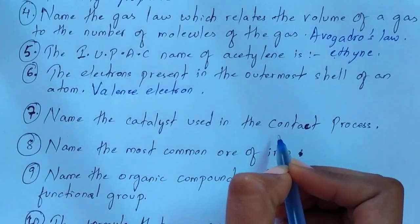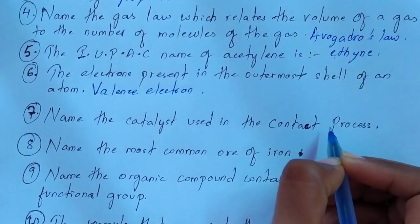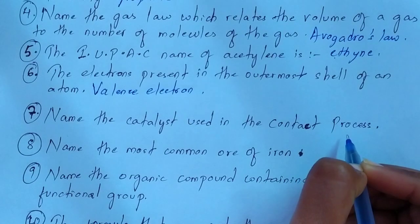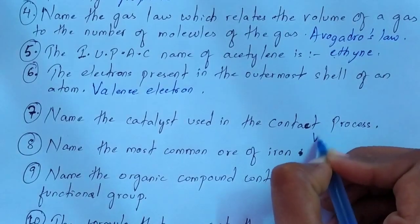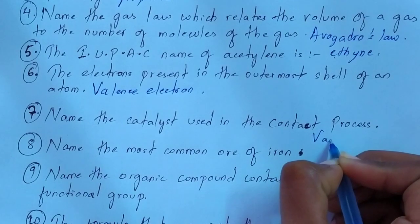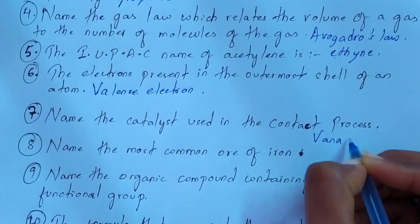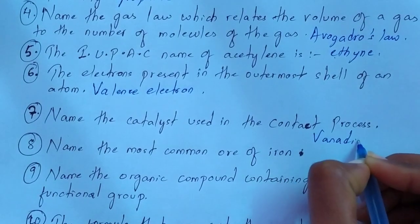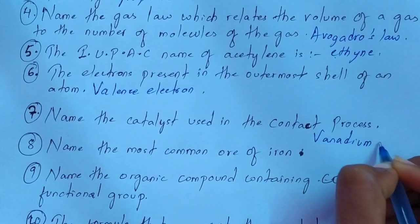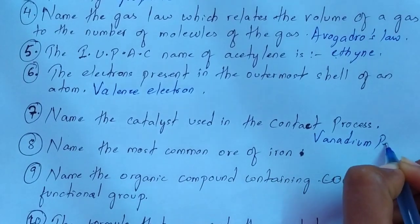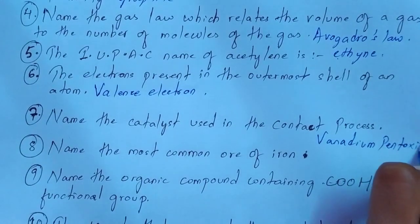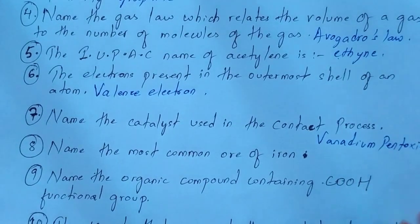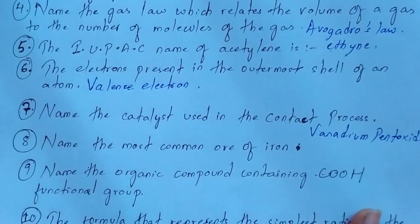Question number 7: name the catalyst that is used in the contact process. The catalyst used in the contact process is vanadium pentoxide.